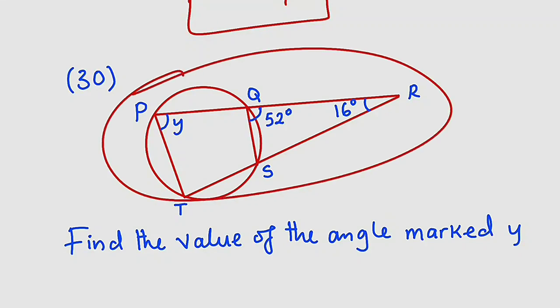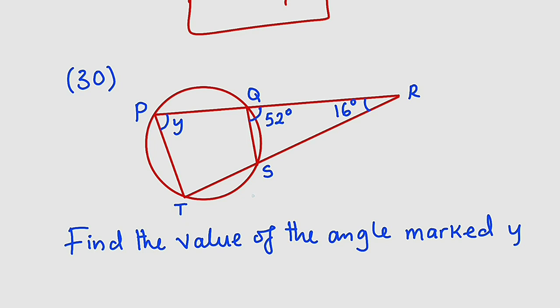We are given a diagram here which is under cyclic quadrilateral theorem, and we are asked to find the value of the angle marked y. So we are looking for this angle, but pay attention to this. This is a triangle.